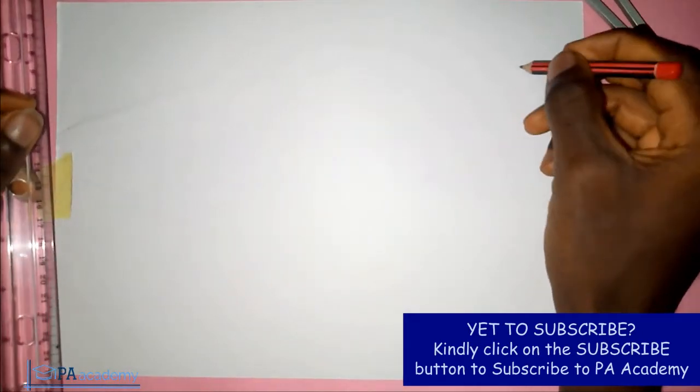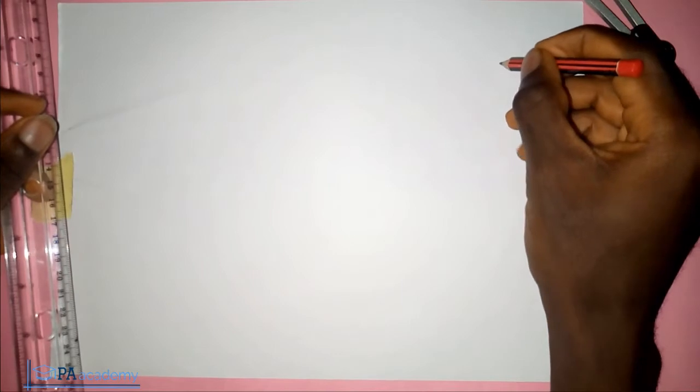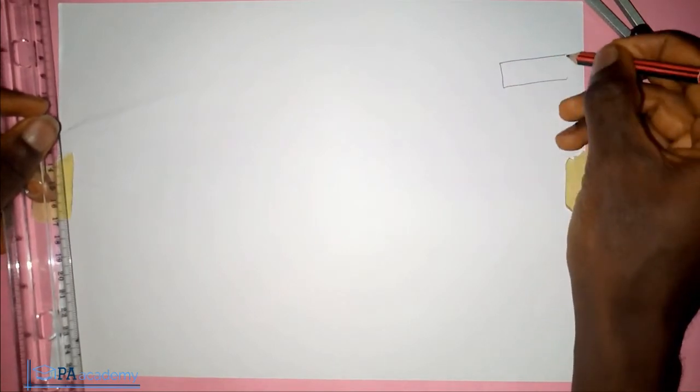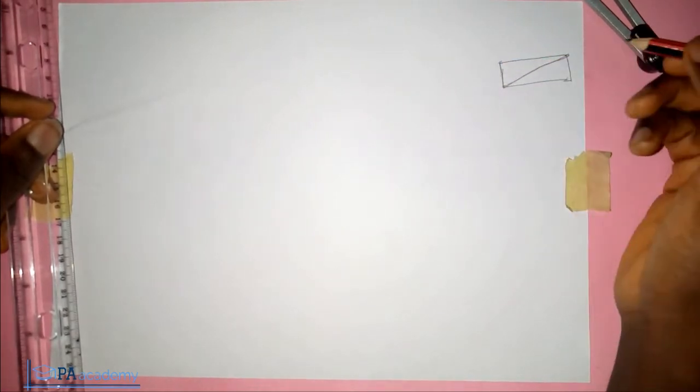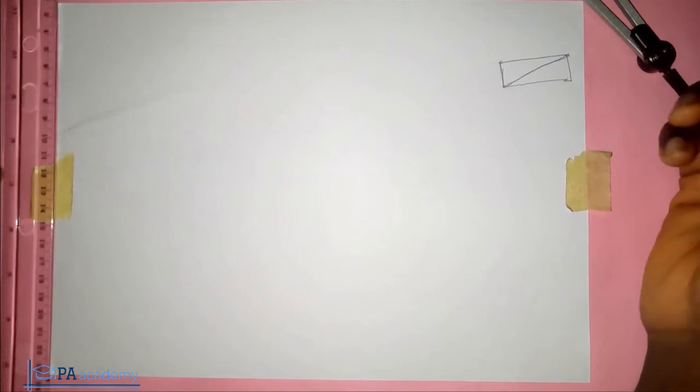So if you are to draw a rectangle, and instead of giving you the length and the height of the rectangle, you are only given the diagonal, that is this line, the diagonal, and the length of one of the sides. So how do we go about it? So that's what we are going to be looking at in this video.